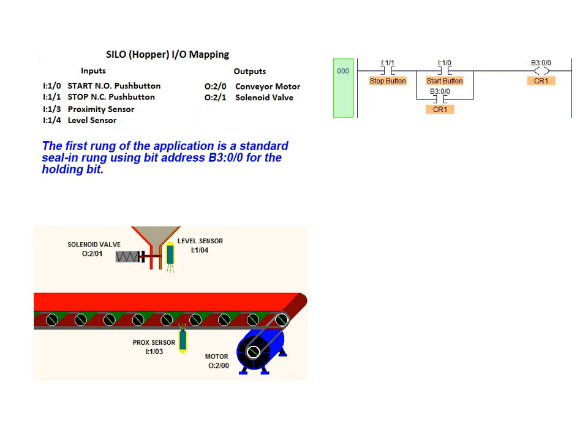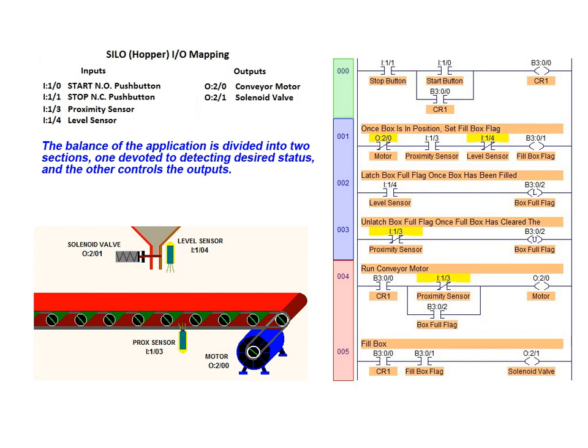The first rung of the program for this application is a standard seal-in rung, which uses bit address B3 0.0 for the holding bit. The balance of the application is divided into two sections: one section is devoted to detecting desired status in the program, and the other section is used to control the state of the outputs in the application.